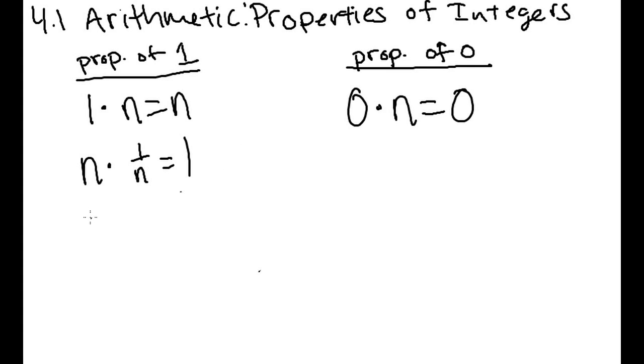One more property of 1 is n over n is equal to 1. So any number divided by itself is 1, because any number divided into that many groups is just 1. So 25 divided into 25 pieces is just 1.